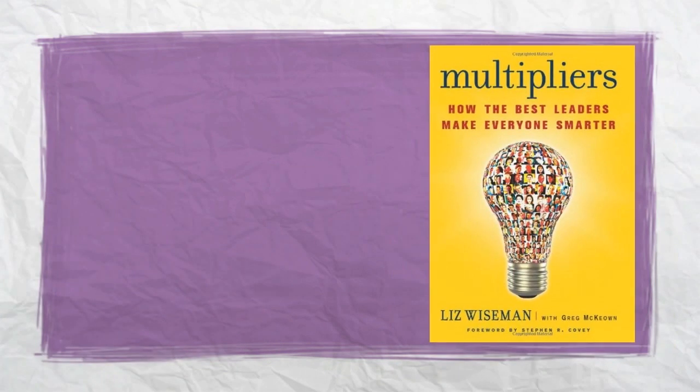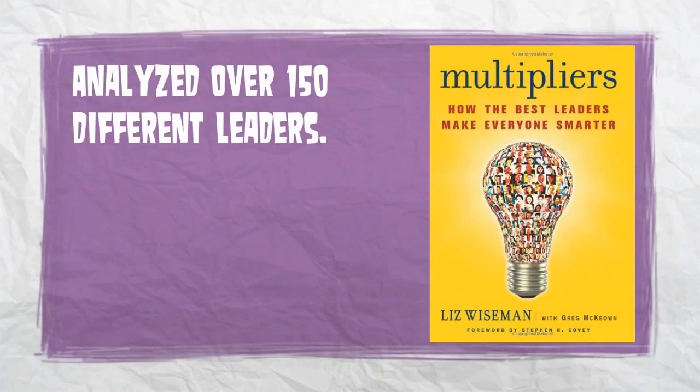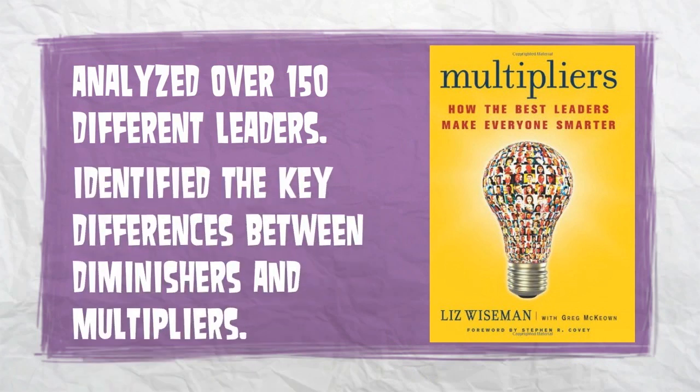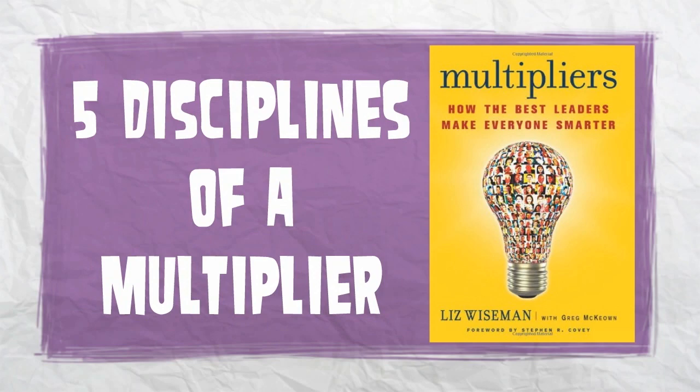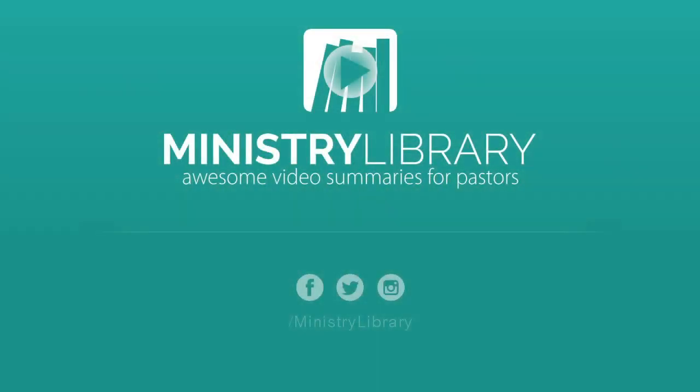Wiseman and McCohen, in their book Multipliers, have analyzed over 150 different leaders and have identified the key differences between diminishers and multipliers. So over the next few minutes, we're going to share with you the five disciplines of a multiplier.